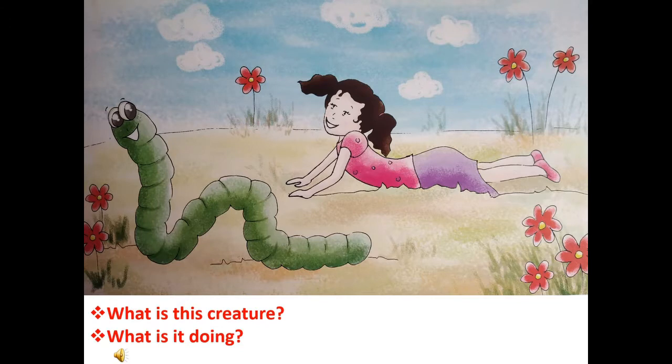Now the next page. What is this creature? Children, in this picture you can see a creature. There is a girl and there is a creature. What is the creature? What is the name of this creature?